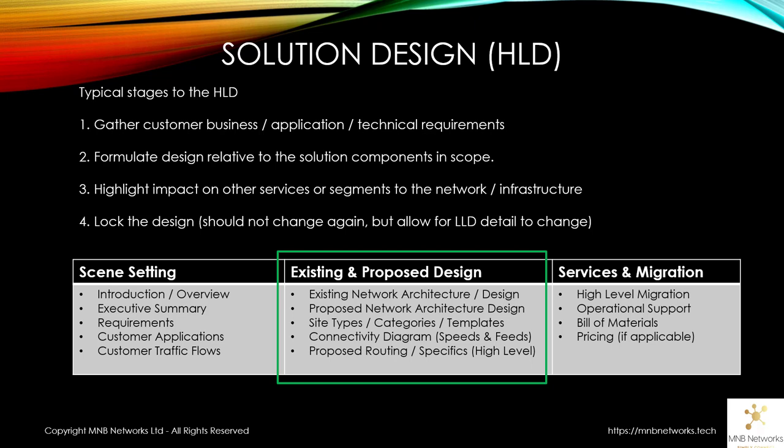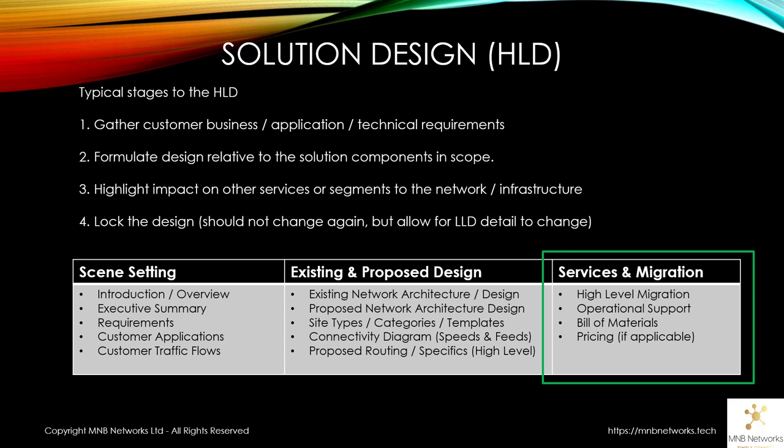The proposed design section covers the existing network architecture, proposed network architecture, and any site typing or categorization — we might have one site type, three, five, or more depending on the customer environment. We would include a connectivity diagram showing how things connect and discuss routing protocols that will be used, but we will not discuss specifically how they are configured at this stage. We then move into the services and migration part of the document, covering very high level migration methodologies and processes, such as cookie-cutter single site cutovers, which is a historical methodology in wide area network design and migration.